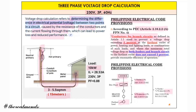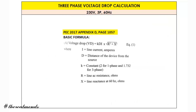After that simple knowledge about voltage drop together with the PEC provisions, let's work with the formula. This is coming from PEC 2017, Annex D, page 1557. The voltage drop VD equals K times D times I times the square root of R squared plus X squared, where I is the line current in amperes, D is the distance of the device from the source expressed in meters, and K is a constant — 2 for single phase, 1.732 for three phase.